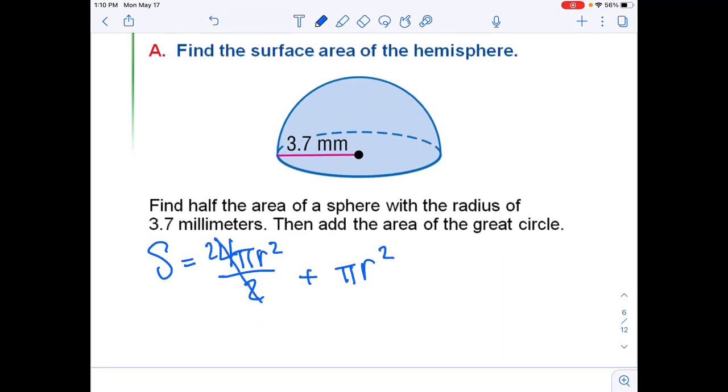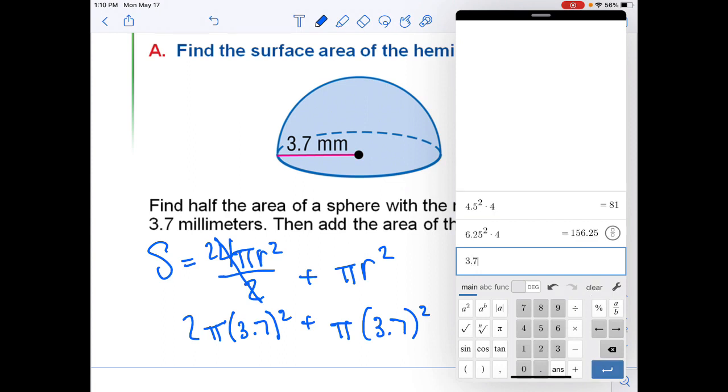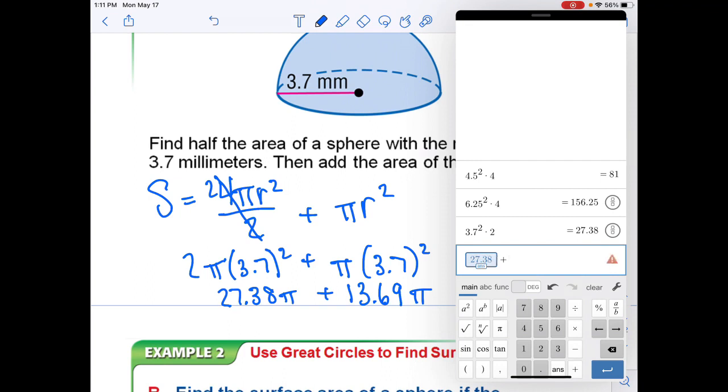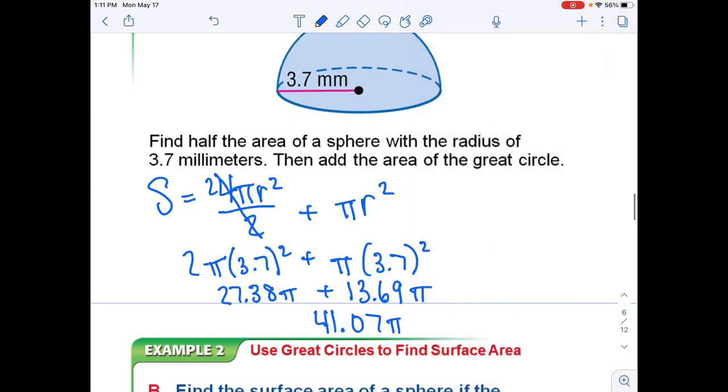I'm going to go ahead and reduce this. So I have 2πr² plus πr². I get 13.69π here. I get 27.38π here. And then I can just add these. I get 41.07π millimeters squared for my surface area.